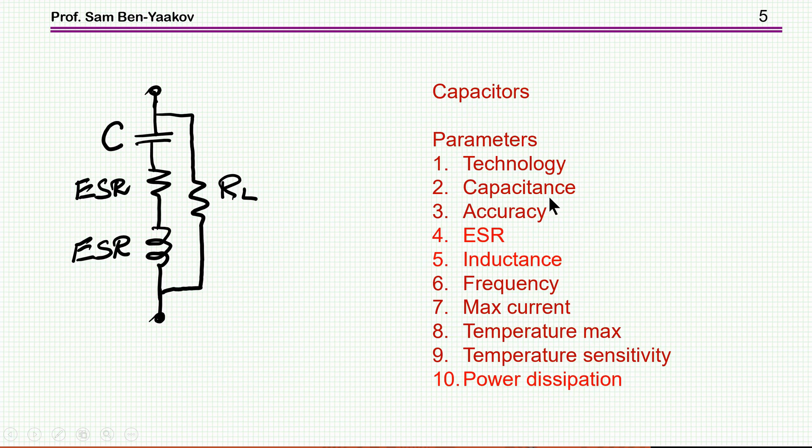This is the prime parameter. Accuracy, ESR, inductance are very important, and not always very well specified. The frequency of operation, maximum current, maximum temperature, and also temperature sensitivity of the capacitance. And power dissipation is also not always specified. All the red ones are points to look at very carefully.